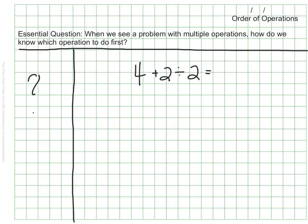So let's take a look at a quick number sentence that we might be asked to solve. We have 4 plus 2 divided by 2. There are two possible ways that people might solve this.